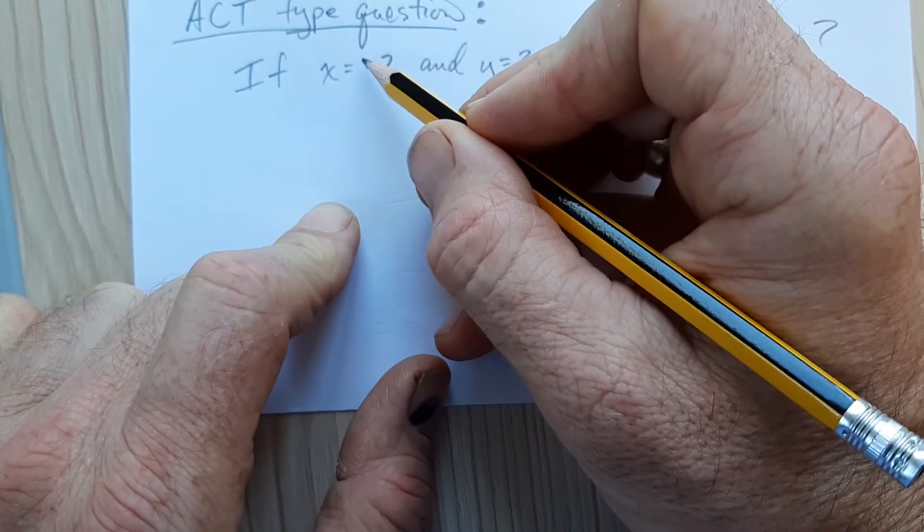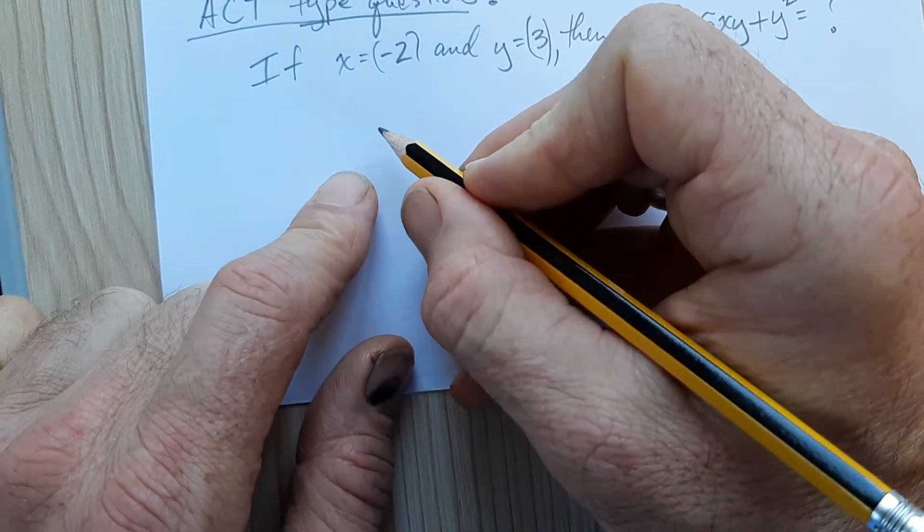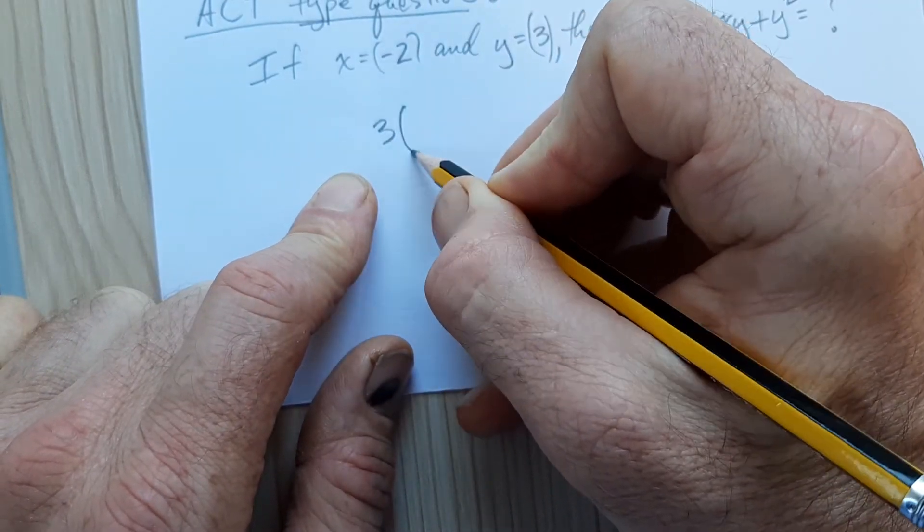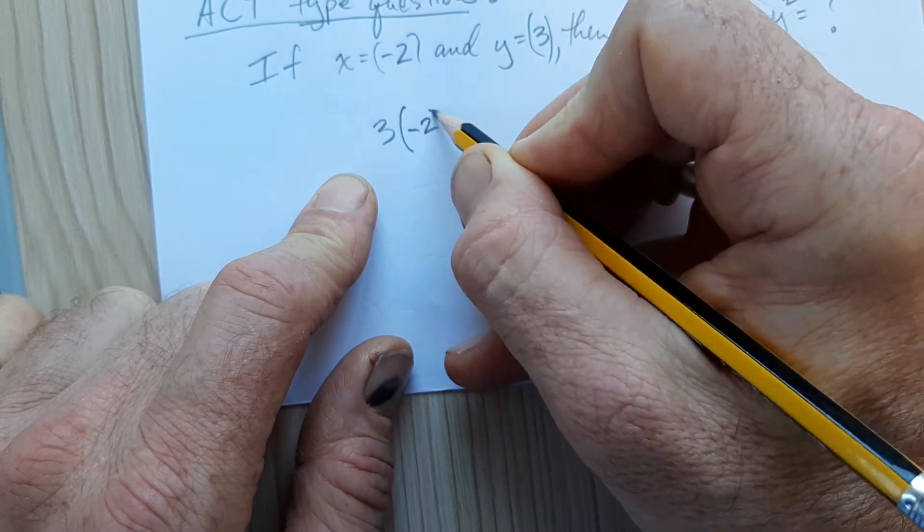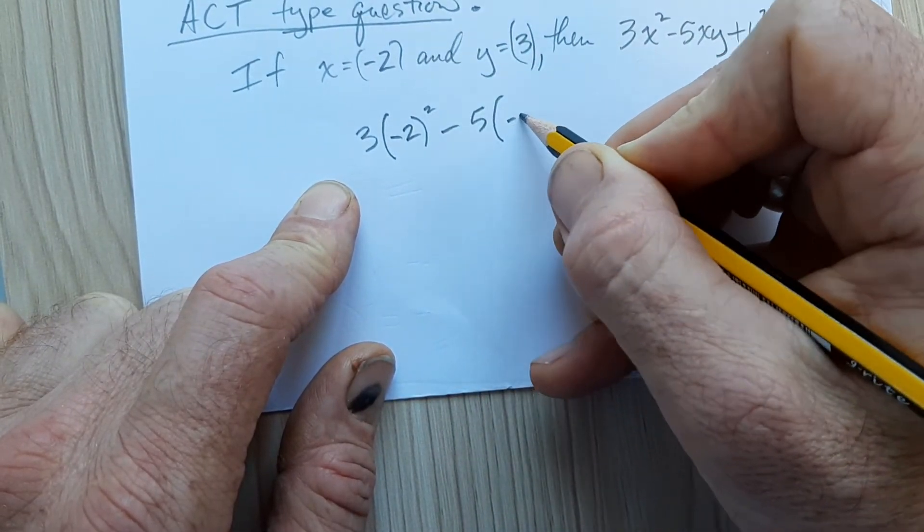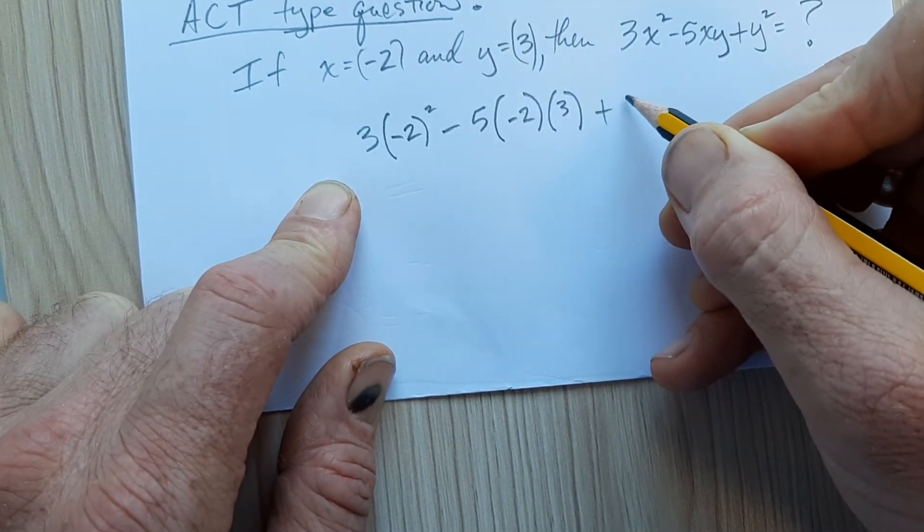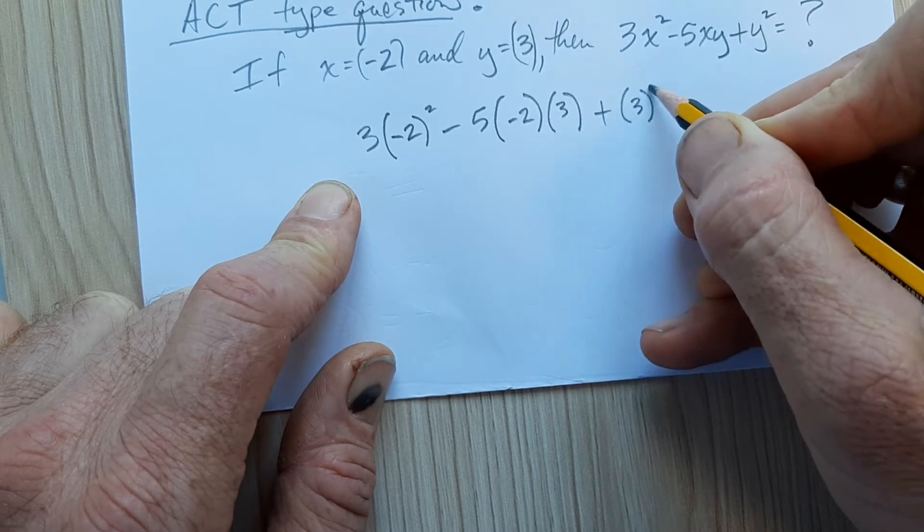I'll write it out and put brackets here and brackets here. See if I can get this done in a minute. So I substitute it, and I got 3 times the x value squared minus 5 times the x value times the y value plus the y value squared.